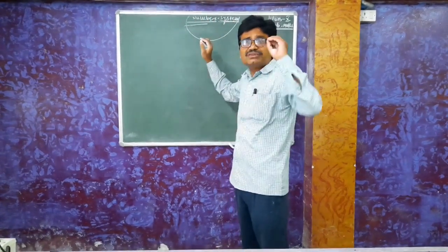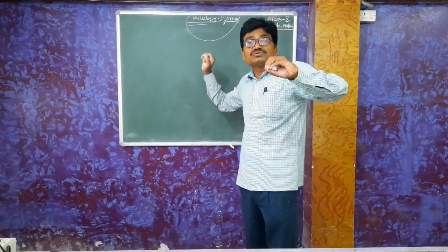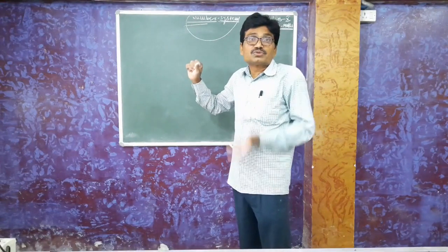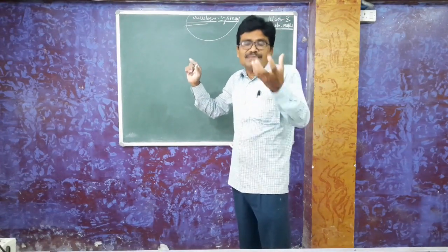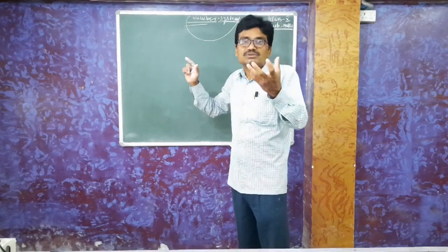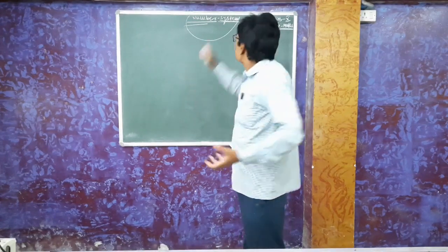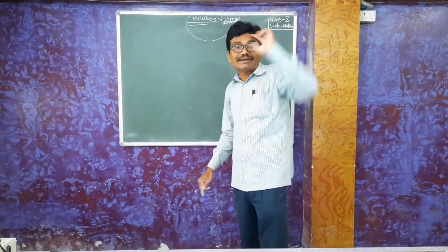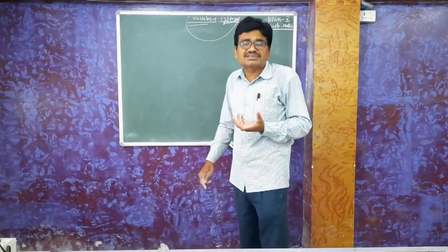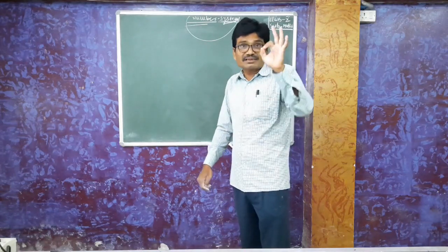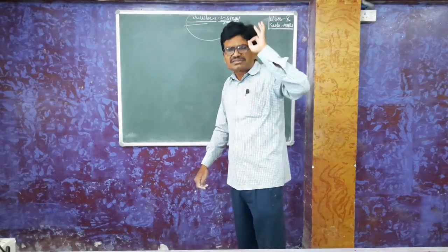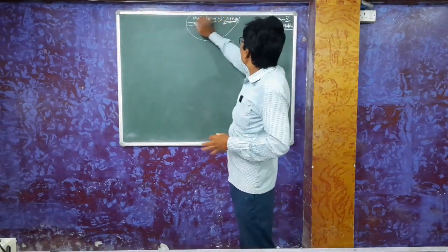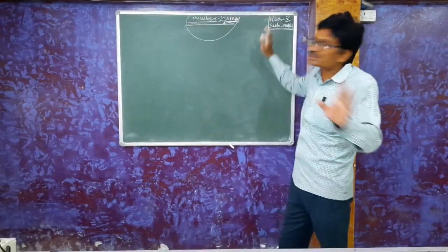Whenever we use two or more than two physical quantities to operate or solve any problem, then the set of two or more is known as a system. When two or more than two forces act on a body, we say it is a system of forces. Similarly, here there are different types of numbers we use to solve problems, so the family of these numbers is known as number system.